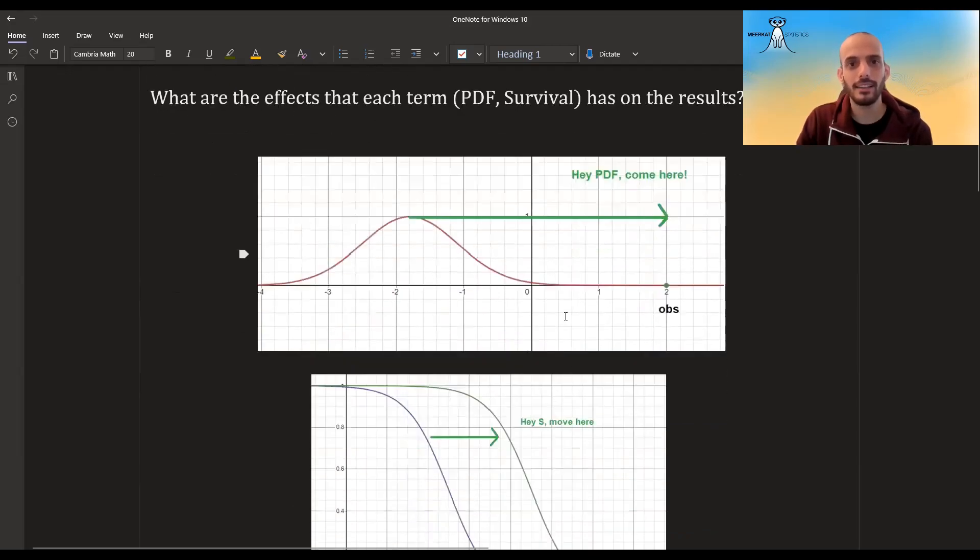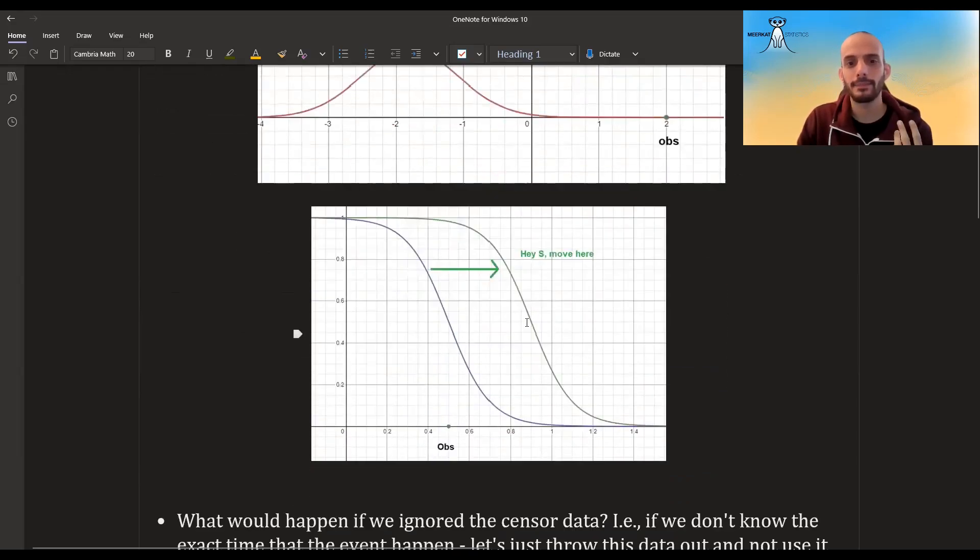In this kind of analogous way, the survival function always pulls, it tries to maximize. If we have an observation here, and this is the survival function, it wants to raise the value. So right now, the value of this is around 0.5, it wants it to be higher and higher. So it's kind of like pushing the survival function, either calling it to move right, or just changing it, that it kind of raises the value of the survival function.